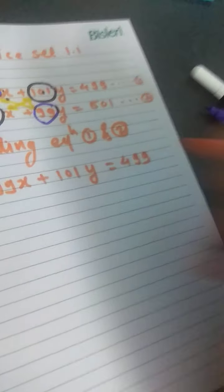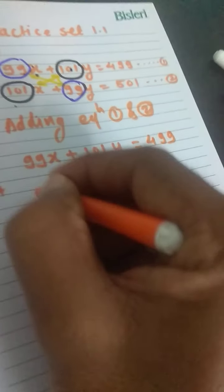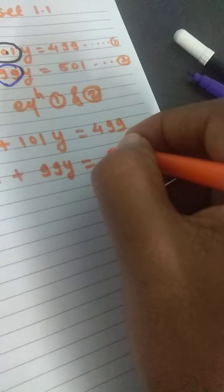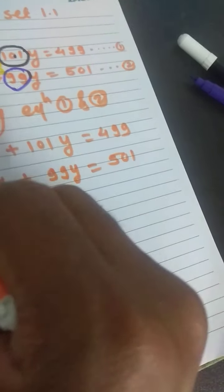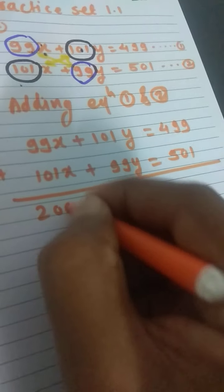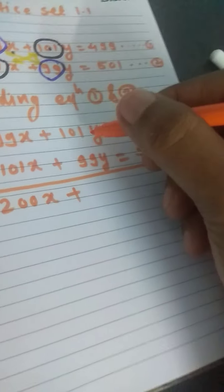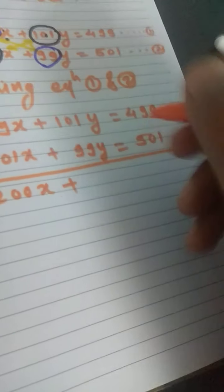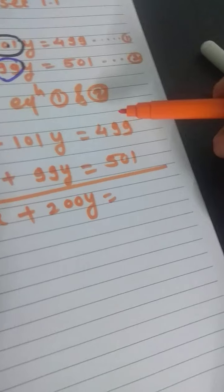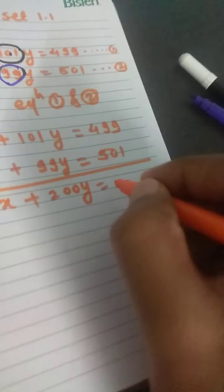499, plus 101x plus 99y equals 501. Adding these, we get 99 plus 101 is 200x, plus 101 plus 99 is 200y, and 499 plus 501 is 1000.